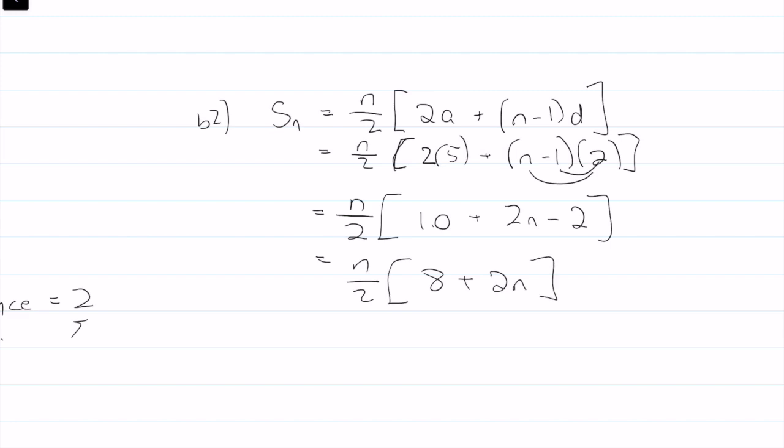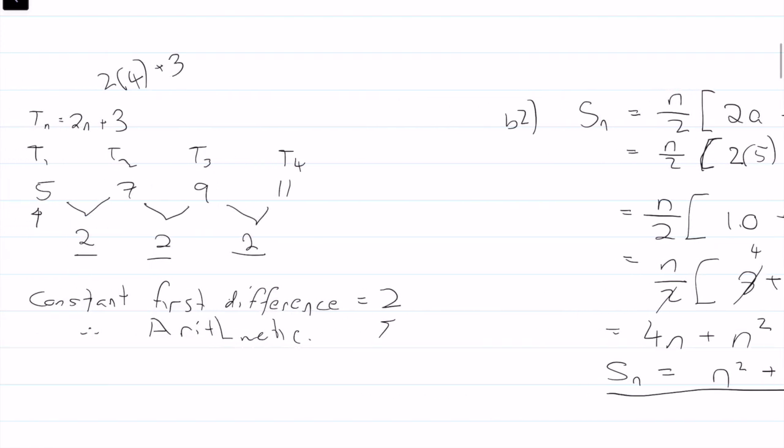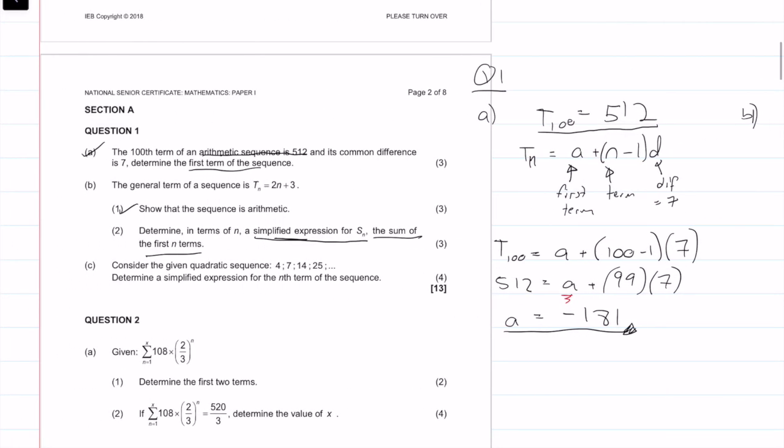And then if we multiply everything in, we get, so this 2 is going to cancel with that to make it 4. So then we get 4n plus these 2s will cancel. So we're left with plus n squared. So our final answer is going to be Sn is equal to n squared plus 4n. So I hope you guys can see. As long as you know which formulas to look for, this is just plug and play, and we get 3 marks for that.